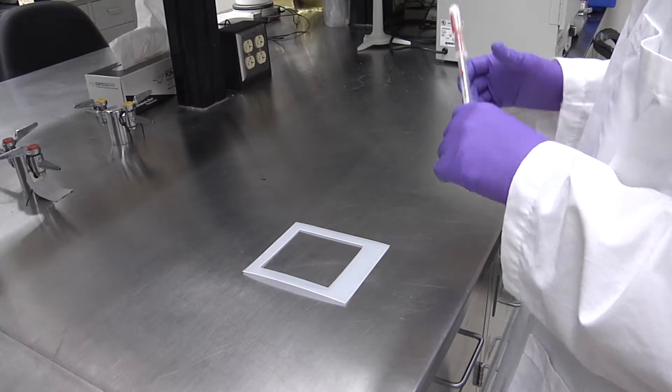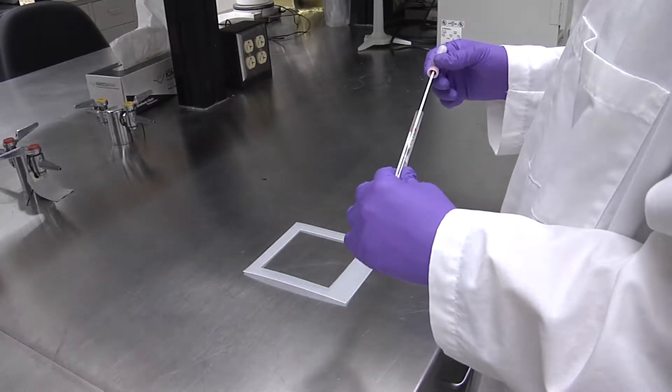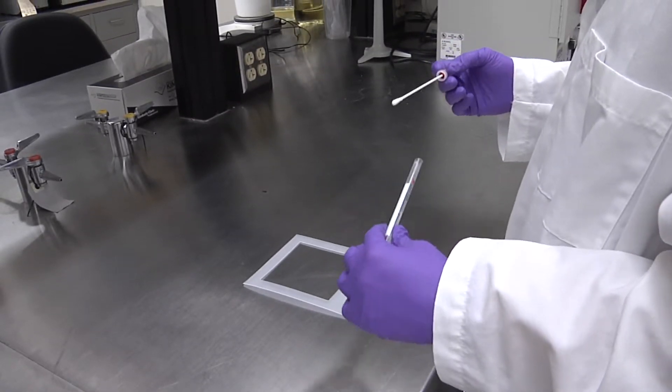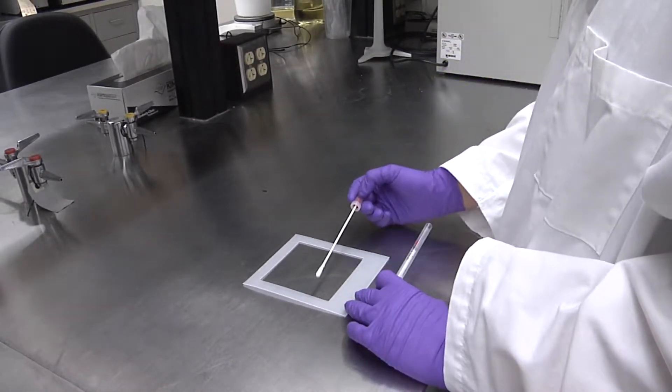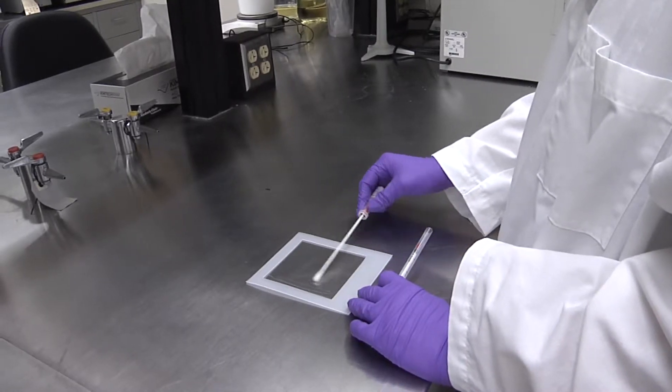To begin with, lay the sterile form on the surface you intend to test. Remove the moistened swab from the sheath without touching the swab itself. Then wipe the surface inside the form with the swab, staying within the 2 inch by 2 inch area.